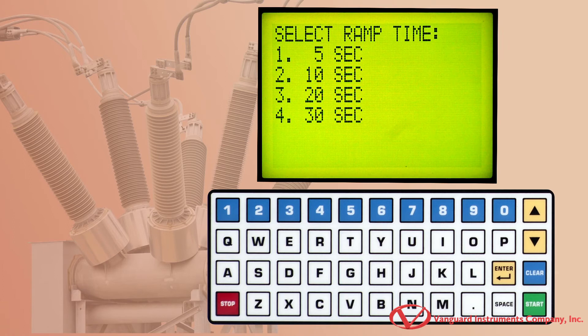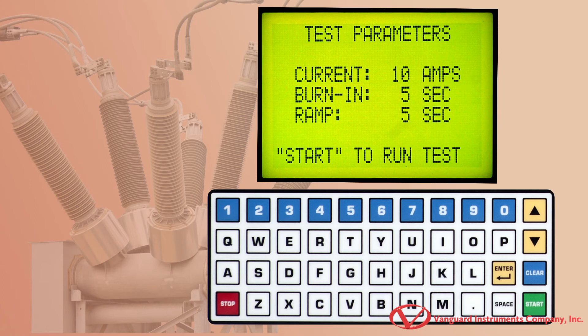Press the 1 key to select the 5 second burn in time. On this screen, we'll select the ramp time of 5 seconds by pressing the 1 key.